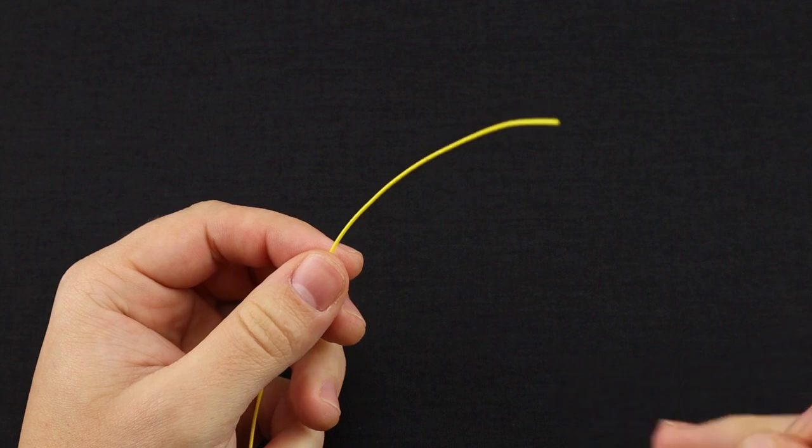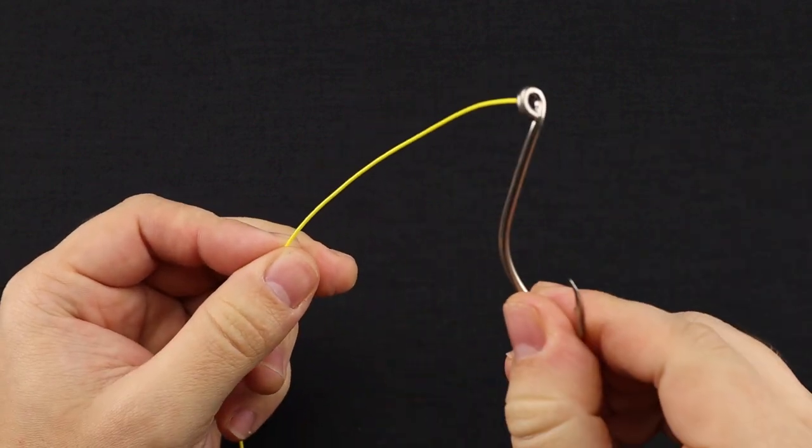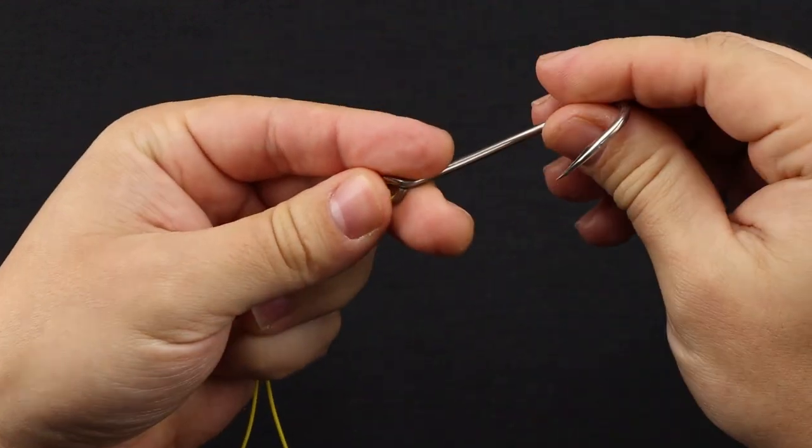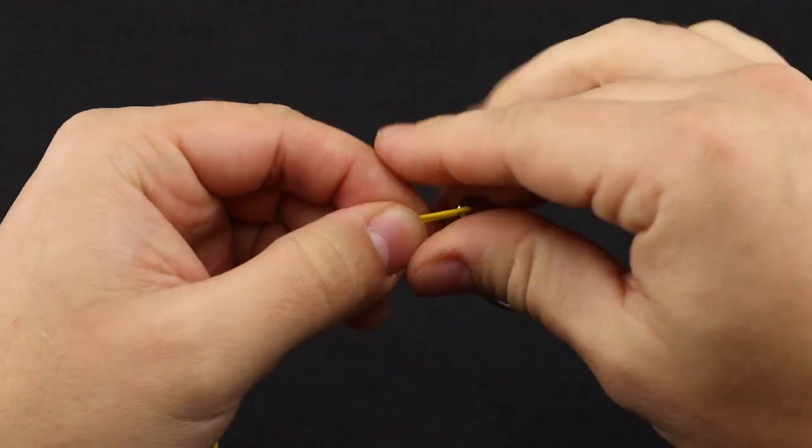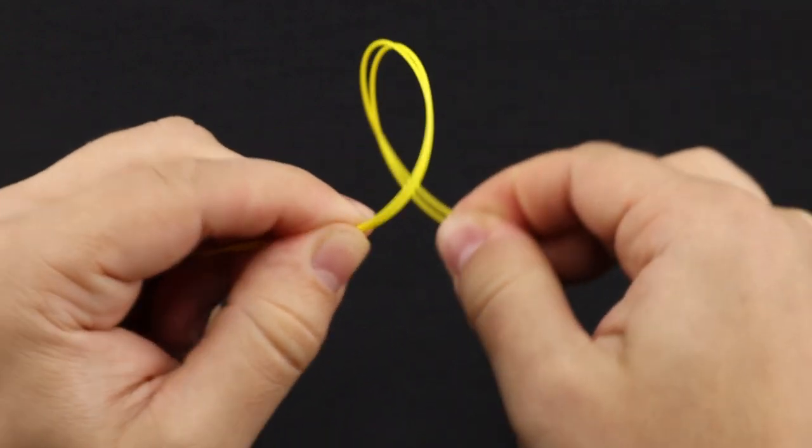So with your hook or lure, I'm going to use this hook here. Your first step will be to place the line through the eye of the hook, and then go ahead and double over your line. And same as before, get the left and right side tight. Make your loop.